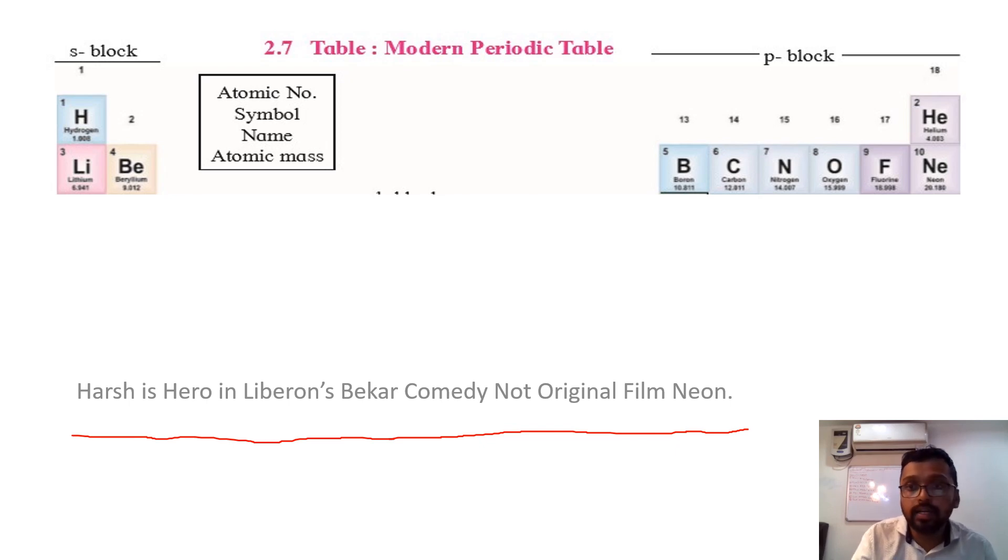So now we will see how we can relate to this story. First word is Harsh - H hydrogen. Then Harsh is Hero - He, He, helium. In Lebron's - Lebron's Li and Be combined to make a word. Li and Be, Lebron's, BKR, this word.